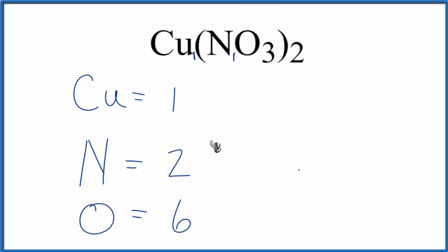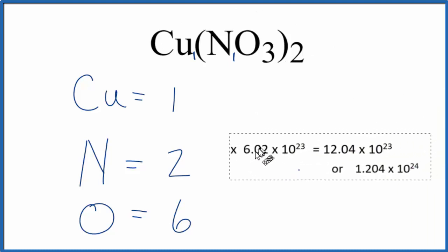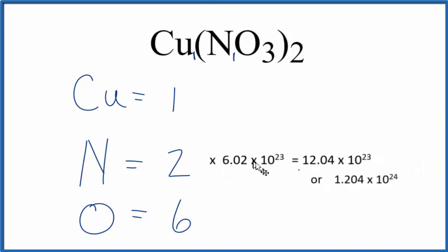Sometimes you'll be asked to figure out the number of atoms of, say, nitrogen in one mole of copper 2 nitrate. If you want to do that, you would just take the number of nitrogen atoms, 2, times Avogadro's number, and this gives you the number of nitrogen atoms here in one mole of copper 2 nitrate.